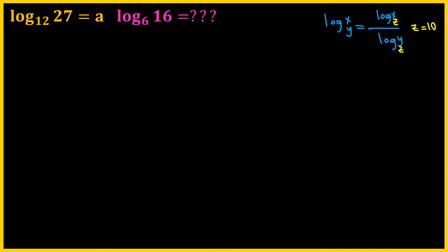The second property that I'm going to use is the power property. Whenever we have log of an exponent, such as x to the n, we can bring the power in front as the coefficient of log, and that means that log x to the n equals to n times log x. And the third property that I'm going to use in this video is the product property, which states that log mn with base b equals to log m with base b plus log n with base b. Basically, whenever we have log of a product, we can separate it into a sum of logs.